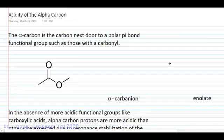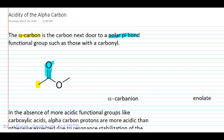Let's talk about acidity of the alpha carbon. We're going to define the alpha carbon as the carbon which is next door to a polar pi bond functional group. A carbonyl is an example of such a functional group, and that alpha carbon is going to be right next door. We'll label it with an alpha.